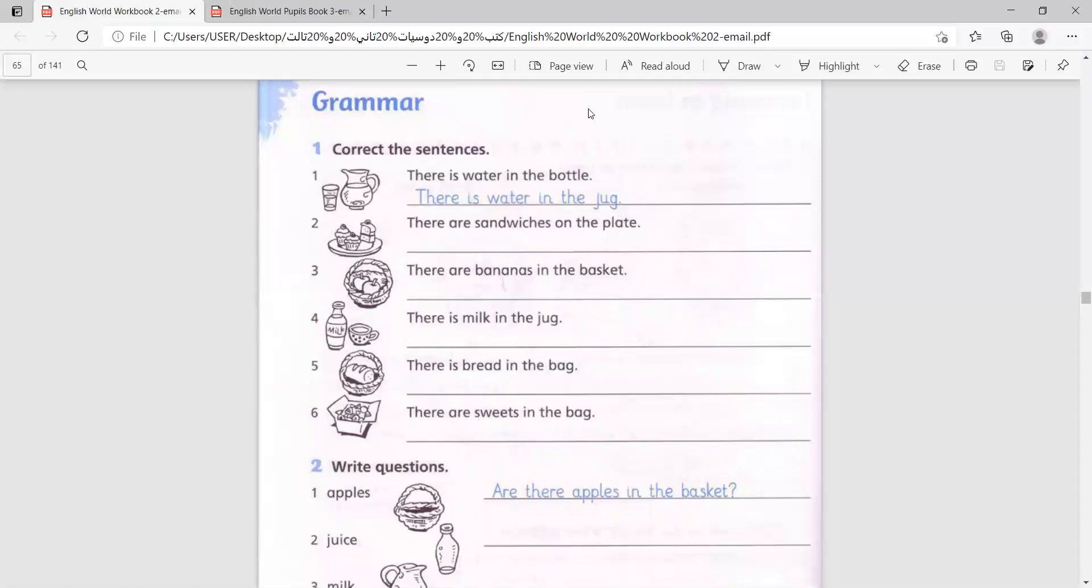Number one: there is water in the bottle. Now we remember that there is for a singular noun and uncountable nouns. Uncountable nouns are things that we cannot count, like water, rice, juice, milk, cheese, butter - things that we cannot count.